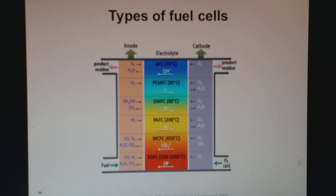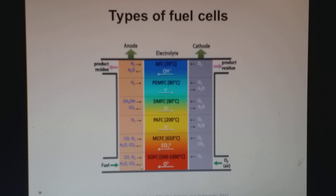For Solid Oxide Fuel Cell (SOFC), temperatures range from 500°C to 700°C, which is considered intermediate temperature. Above 750–800°C it is called a high temperature fuel cell. So SOFC can be both intermediate and high temperature. In this case hydrogen is the fuel, and water and carbon dioxide are the byproducts. For all fuel cell types, water is mainly produced and if carbon dioxide is produced it is in very small amounts, with no other toxic gases — so these are environment friendly.